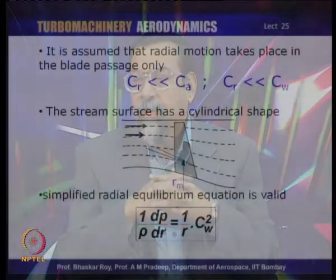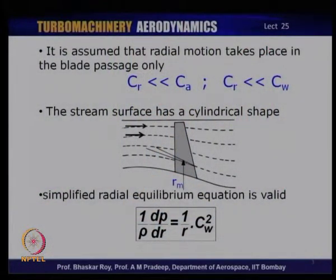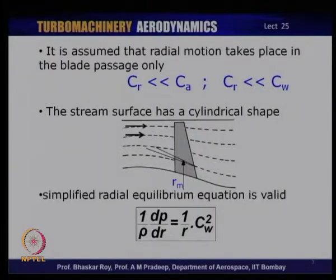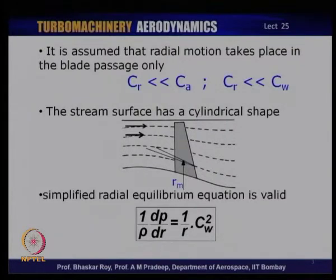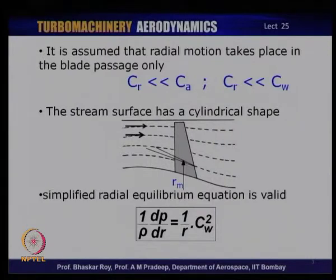One of the first assumptions is that the radial component of the flow is prima facie very small in relation to the axial component C_A and whirl component C_W. We would like to keep it that way by design. Designers attempt to create blades which would promote flow over the blade surfaces with a very small radial component C_R, or V_R if it is a rotor.